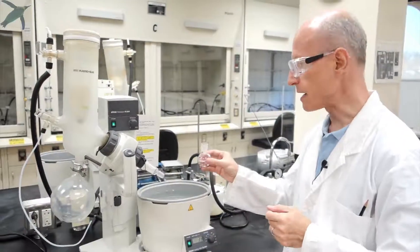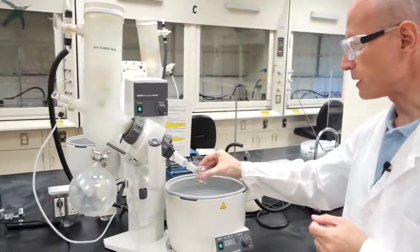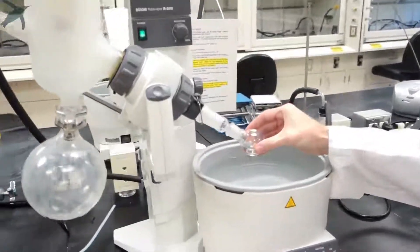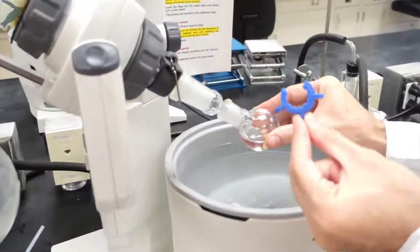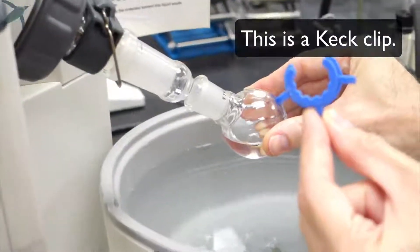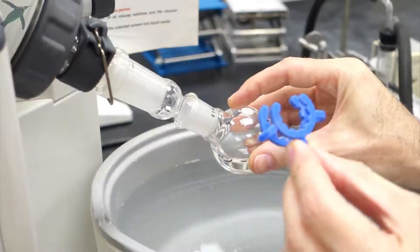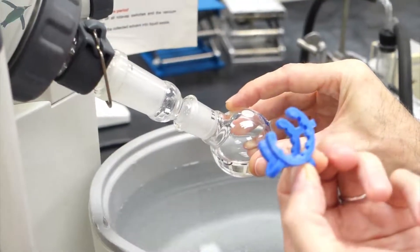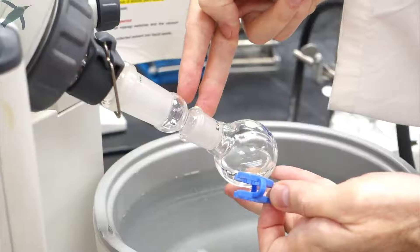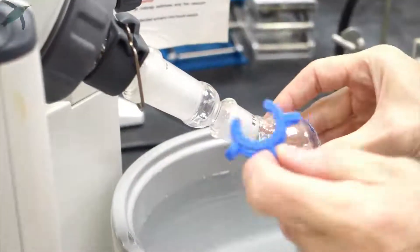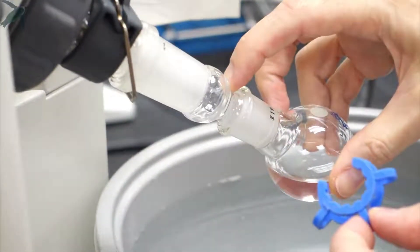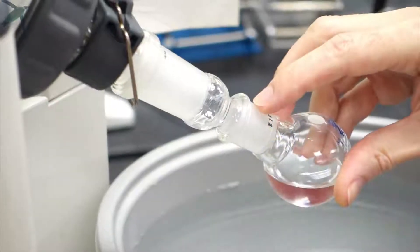To put your flask on the Rotavapor, you couple the glass joint and secure it with a keck clip. The keck clip has two sides: a small side and a large side. You want to straddle the joint and the small side goes on the small neck and the large side goes on the large neck.